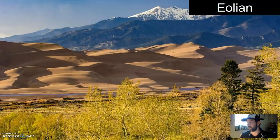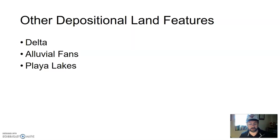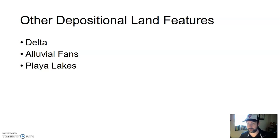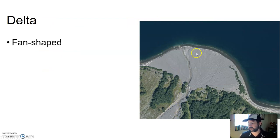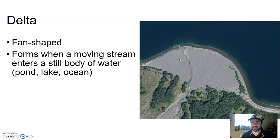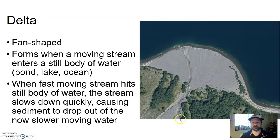There are some depositional land features indicative of areas where sediment is being deposited. Some of those features are called deltas, alluvial fans, or playas — those are land features, not environments. A delta is when a stream enters into a large body of water like a pond or lake and deposits sediment, forming a fan-shaped deposit. Fast-moving stream hits the slow lake or pond, and the material deposits forming this fan — it's called a delta.